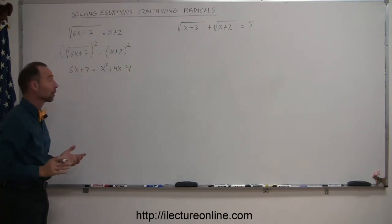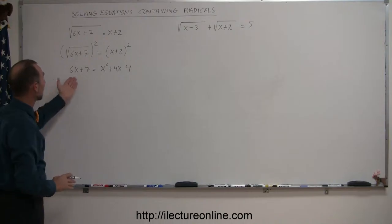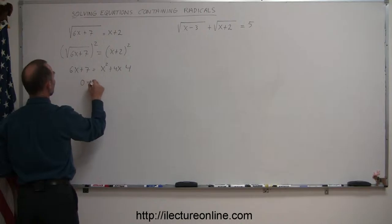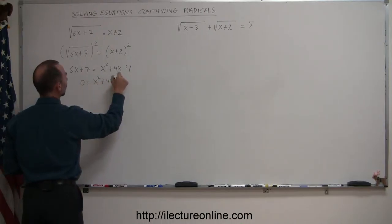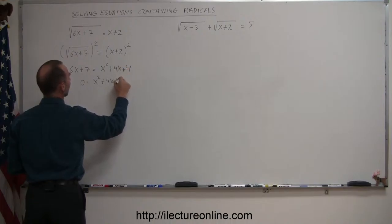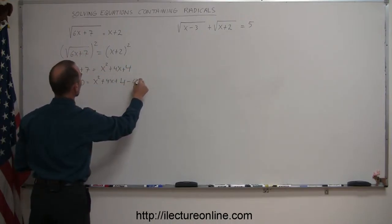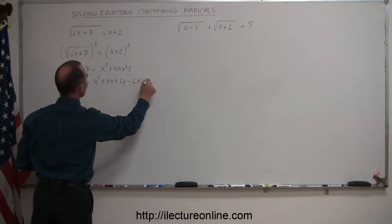Now you can see that you have an equation that's quadratic in nature, so now you want to move all the terms over to one side. So we have 0 equals x squared plus 4x plus 4. And then we move the 6x over, that becomes a minus 6x. We move the 7 over, it becomes a minus 7.